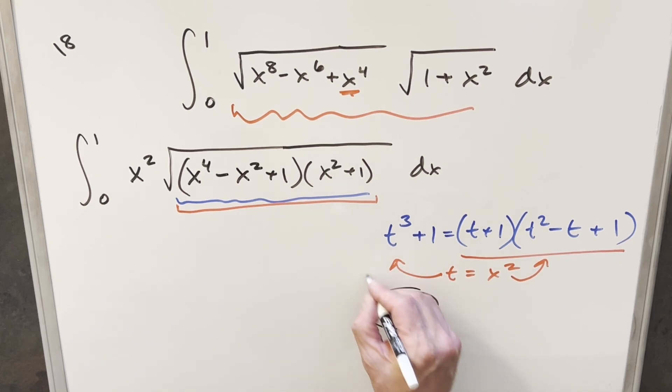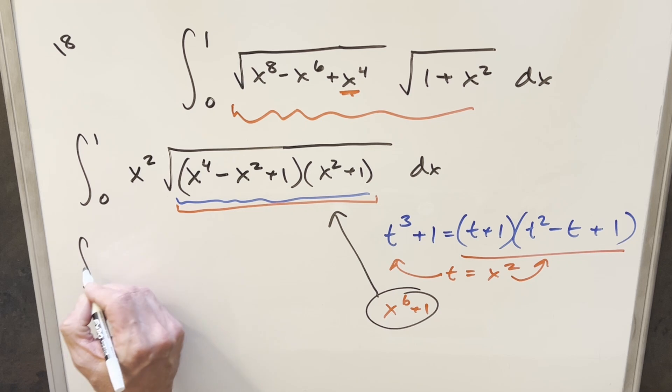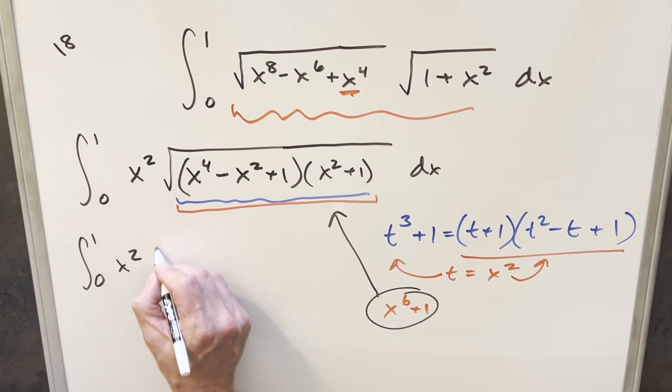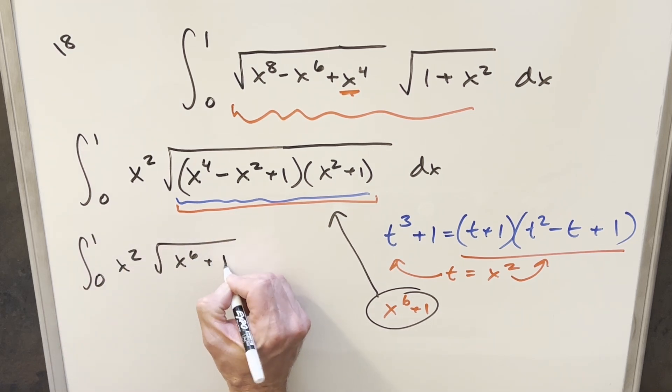So let's just take this value and put this into the radical. So when I do that, what's going to happen, this becomes x squared and this all becomes x to the 6th plus 1 dx.